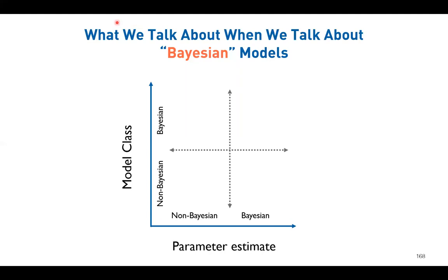Student comment: For me it is still a bit unclear, because we have this fancy theta estimation and everything. At the same time, in JASP there is something like a Bayesian t-test, which seems like a quite normal frequentist method but with different output - no fancy diagrams. So for me it is still a bit hard to distinguish what the benefit is.